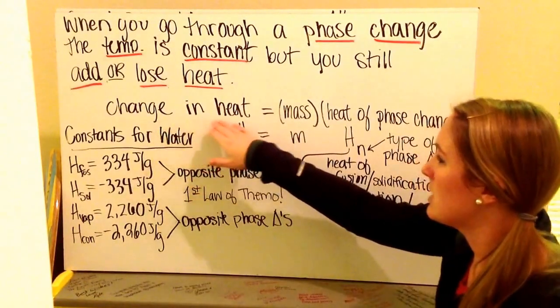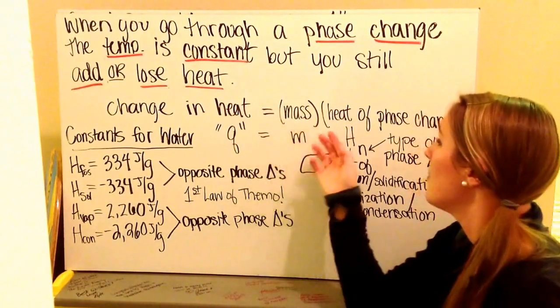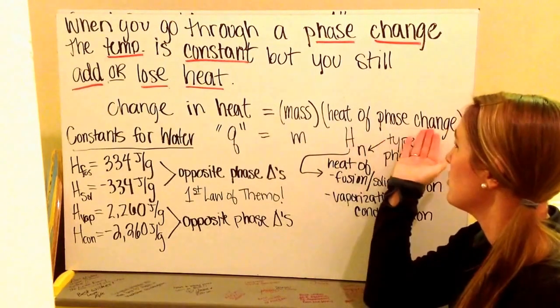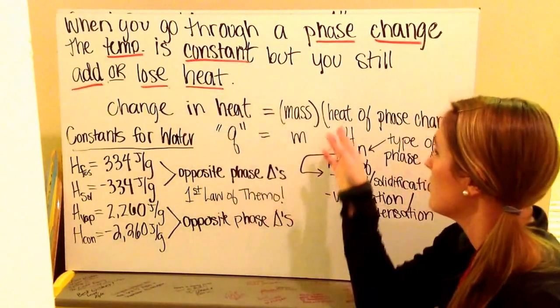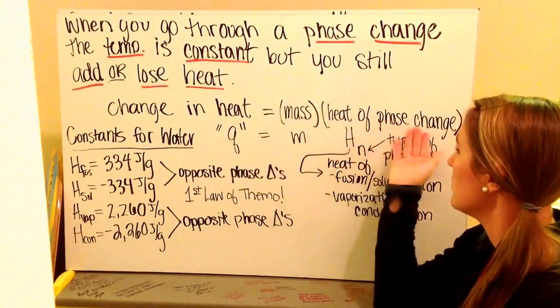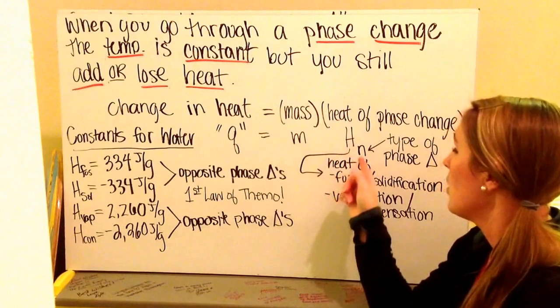My change in heat is going to be equal to the mass, that's the mass given to us in grams, multiplied times the heat of the phase change, since that phase change requires some amount of heat. There's a couple of different types of heats of phase changes. It's shown as an H, capital H, with a subscript.